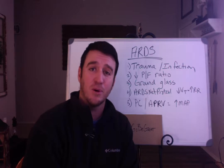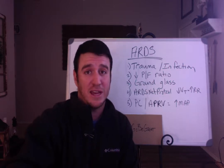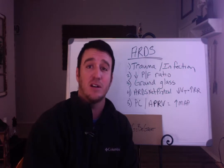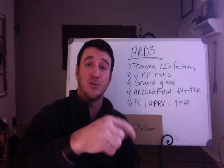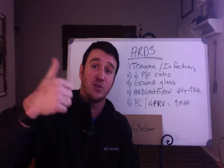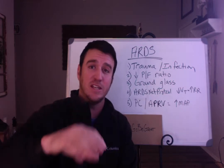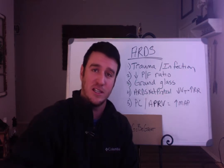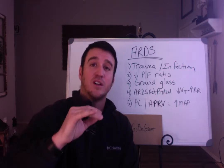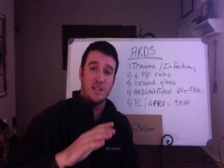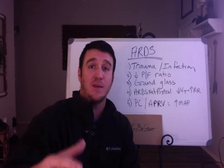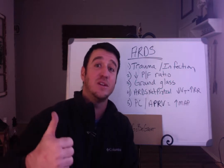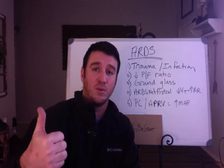The ARDS net protocol, now almost two decades old, says that the best treatment for ARDS with the best outcomes is to decrease your tidal volume and increase your rate. We typically shoot for 8 mls per kilo on the TMC exam. When talking ARDS net, we're talking about dropping to 6 mls per kilo, maybe even 4 mls per kilo depending on your plateau pressure, and increasing your rate to maintain a normal minute ventilation.